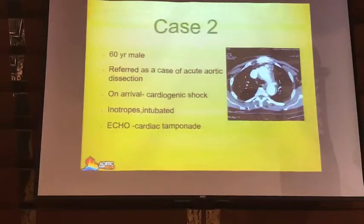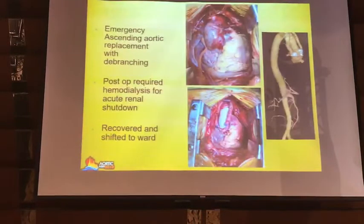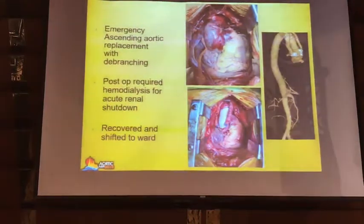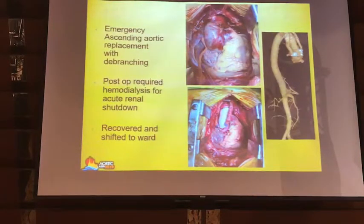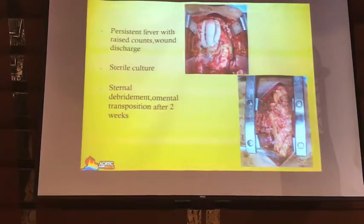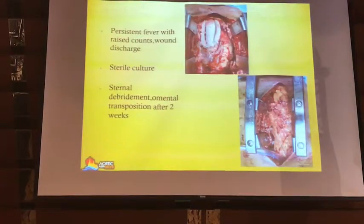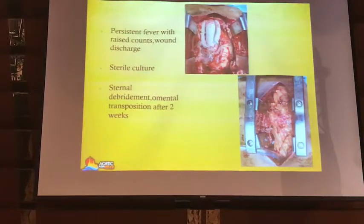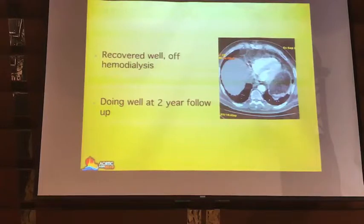The second case is a patient who was referred as an aortic dissection. The patient was in cardiogenic shock with tamponade. There was a tear in the ascending aorta, so the initial plan was to do the ascending aortic replacement, and I planned an endograft later on. After transfer to the ward, he started having fever. You can see the mediastinum in the previous slide was clear, but this one is really contaminated — sternal debridement happened on the eleventh day. Then we did an omental transposition and he recovered well, came off hemodialysis, and is doing well two years after follow-up.